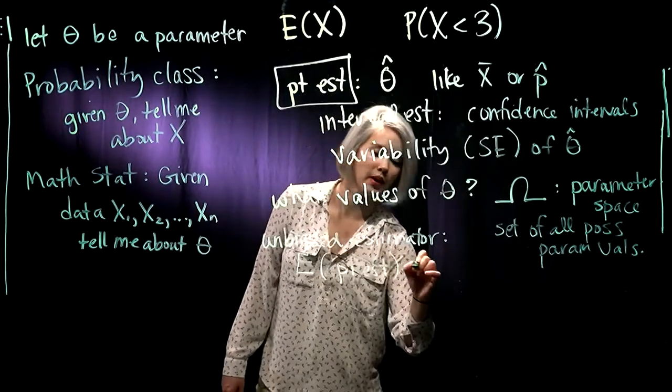Another thing that's important to know before we get into point estimation is we need to see is our point estimate on average going to be estimating our parameter. So we call this an unbiased estimator if it does on average estimate our parameter. So in other words, we're talking about on average. So we're looking at the expectation because that's our like long run average of our point estimate. We want that to be equal to whatever parameter we're estimating.